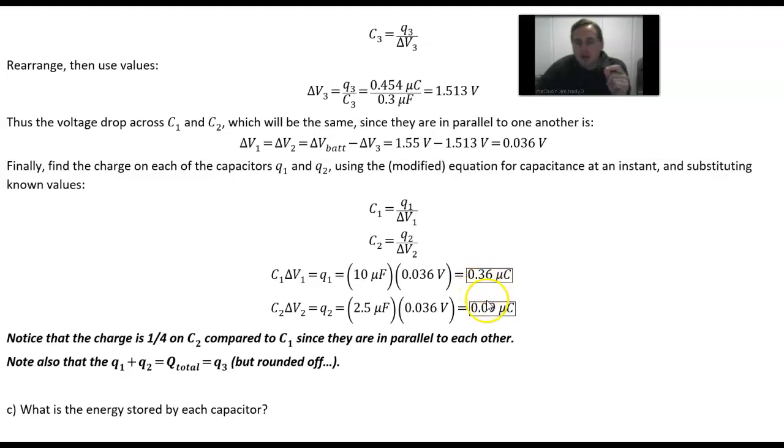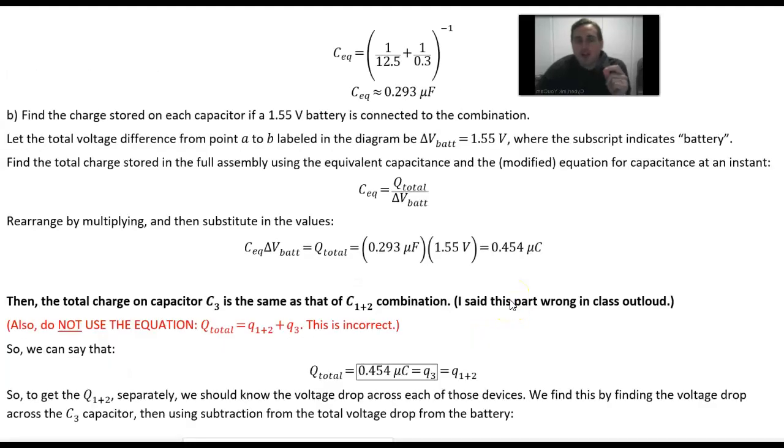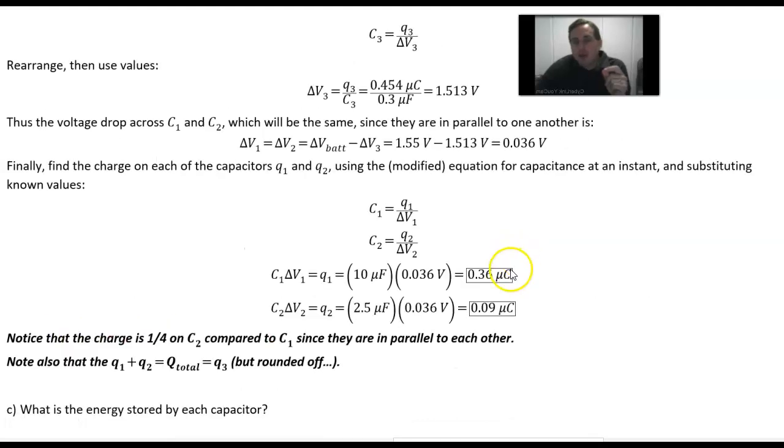Notice 0.36 microcoulombs and 0.09 microcoulombs should hopefully add to this 0.454 microcoulombs. The only reason it doesn't add precisely is because of some rounding errors. Note that the charge on capacitor 2 is exactly one quarter the charge on capacitor 1 because the capacitance of capacitor 2 is one quarter of the capacitance of capacitor 1, but they each have the same voltage across them.